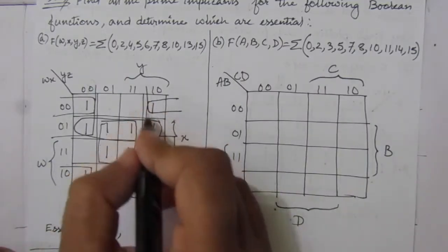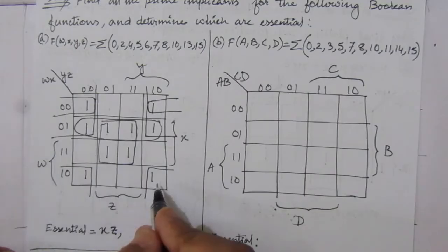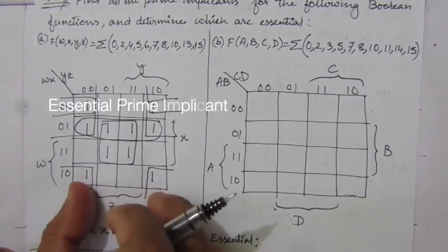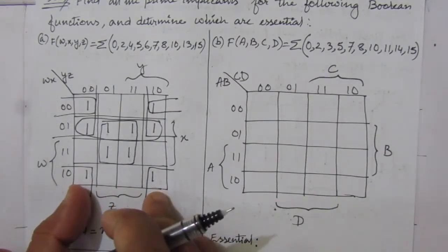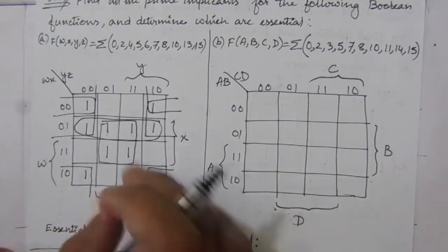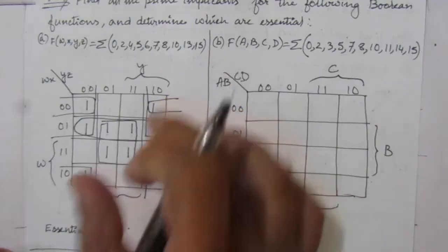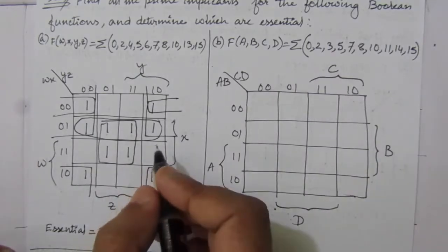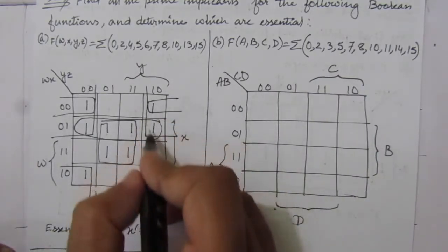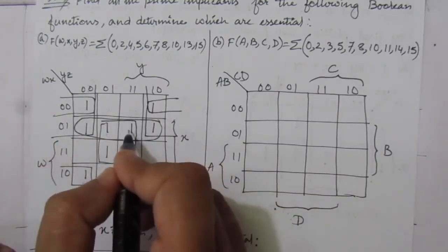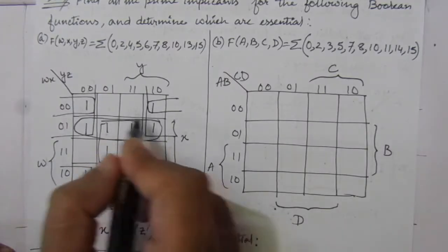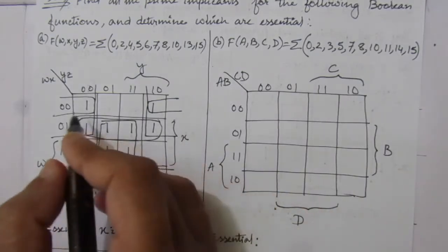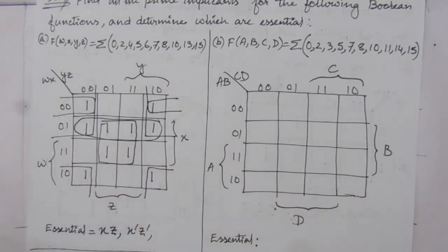Now let us see the combination of all corner values. This one and this one are covered by only this corner combination. From the first and fourth columns we get z̄, and from the first and fourth rows we get x̄, giving us x̄z̄. All remaining parts have more than one combination covering them. So these are the only two essential prime implicants for the first problem.